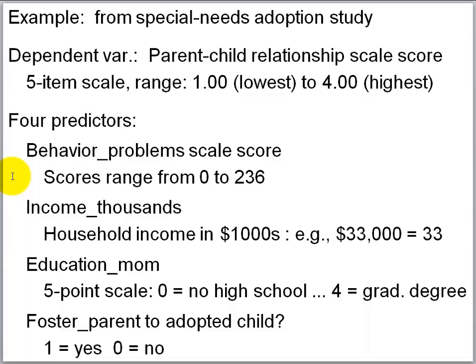Behavior problem scale score is a score on a standardized instrument, with possible scores ranging from zero to 236. Income of the adoptive family is a second predictor, coded in thousands of dollars — so a family earning $33,000 would be coded as 33. Another predictor is mom's education level, measured on a five-point scale where zero conveys not graduating from high school and four conveys a graduate degree.